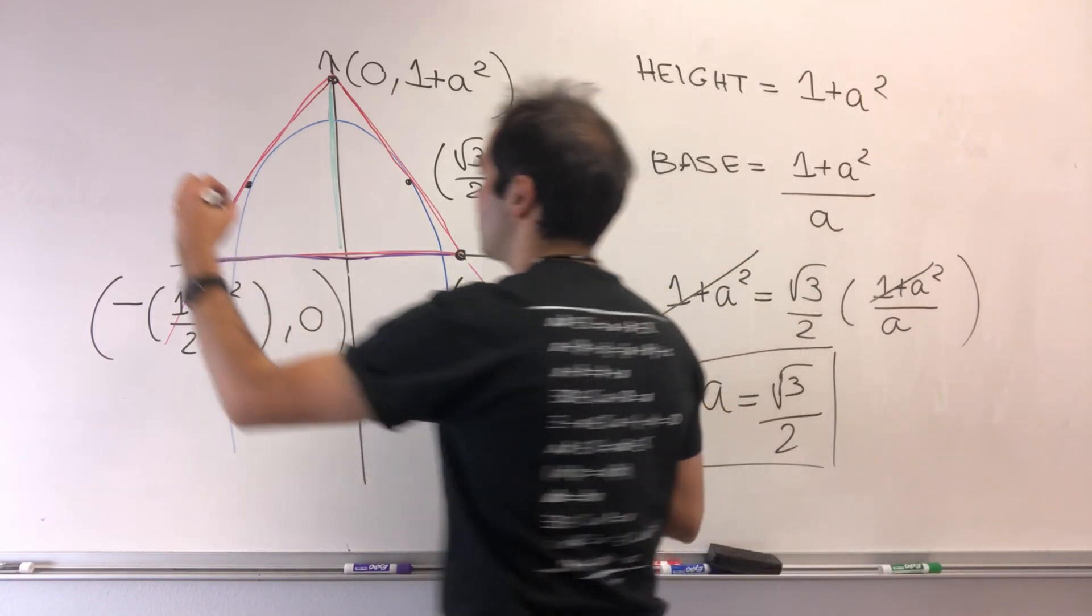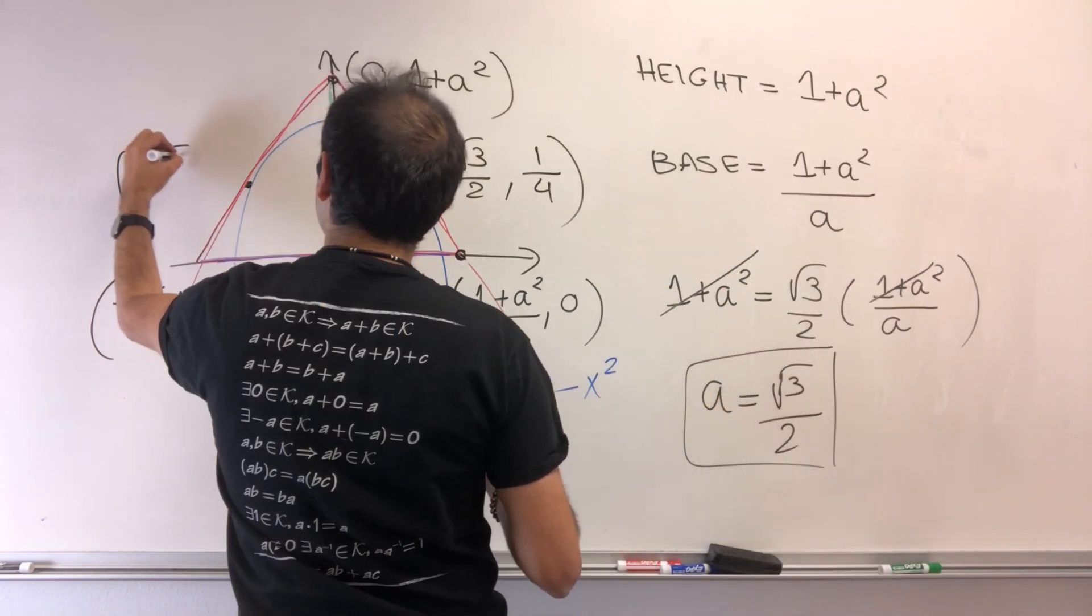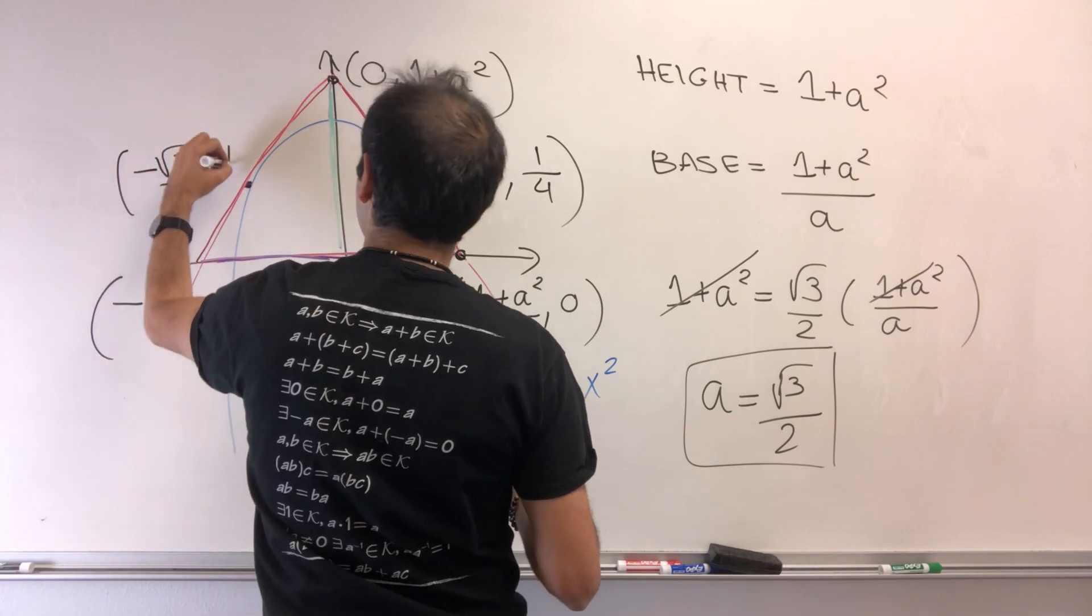And again, by symmetry, this gives you (minus square root of 3 over 2, 1 quarter).